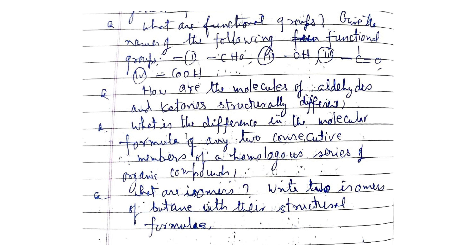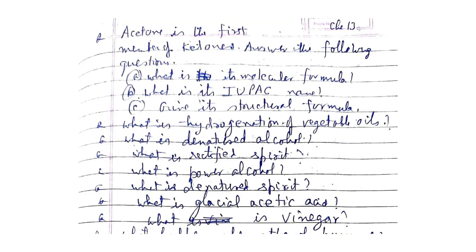What is an alkyl group or alkyl radical? What are alcohols? State the general formula of alcohols. What are aldehydes? State the general formula of aldehydes. What are ketones? State the general formula of ketones. What are functional groups? Give the names of the following functional groups: –CHO, –OH, C=O, C=OH. How are the molecules of aldehydes and ketones structurally different? What is the difference in molecular formula of any two consecutive members of a homologous series?